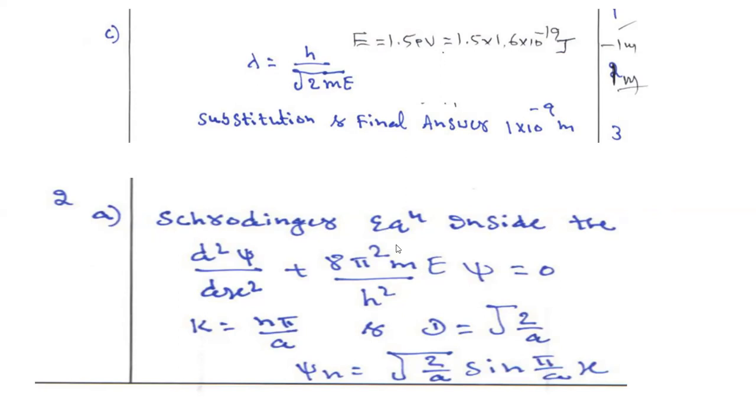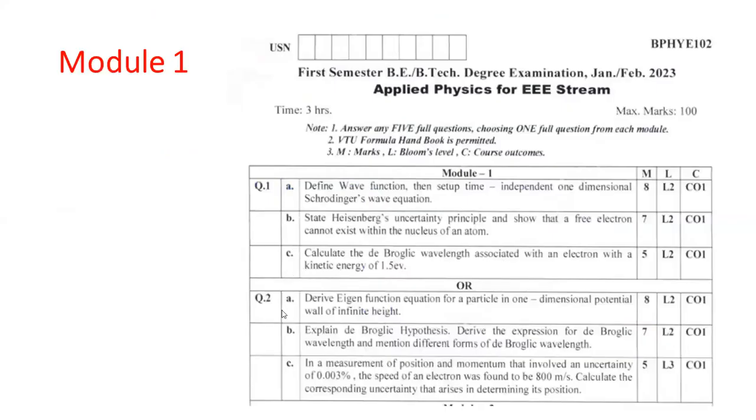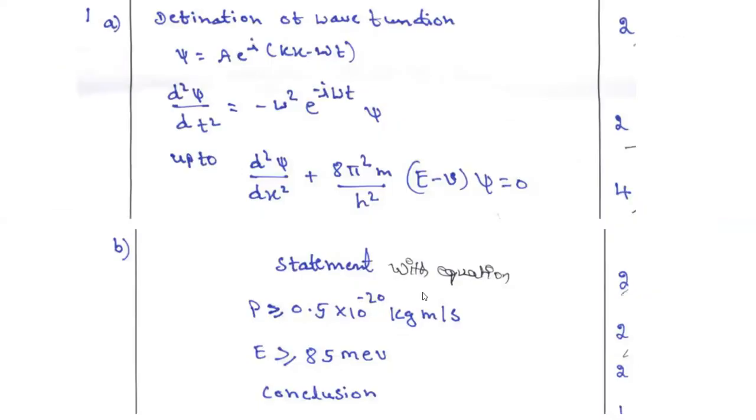First one is 2A will be Schrodinger equation. You can write. Already you might have studied the general equation of Schrodinger wave equation. You can write. That was question number 2A. I think it's clear to everybody. Now we are going to discuss about question number 3 and 4 which is from module 2.